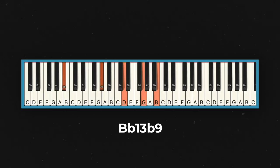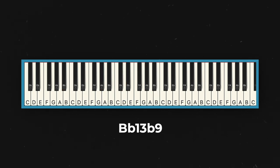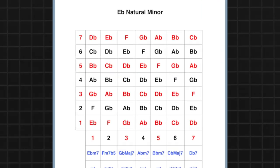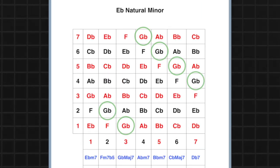Now here's a little bonus chord for you. If you want to get a little extra spicy on that V chord, you can play a G in the voicing, which is the regular 13 — that's Bb13, b9. Now you'd think the b13 would be spicier, but it's not. And that's because the b13, Gb, is already in the Eb minor scale, whereas the regular 13, G, is not.